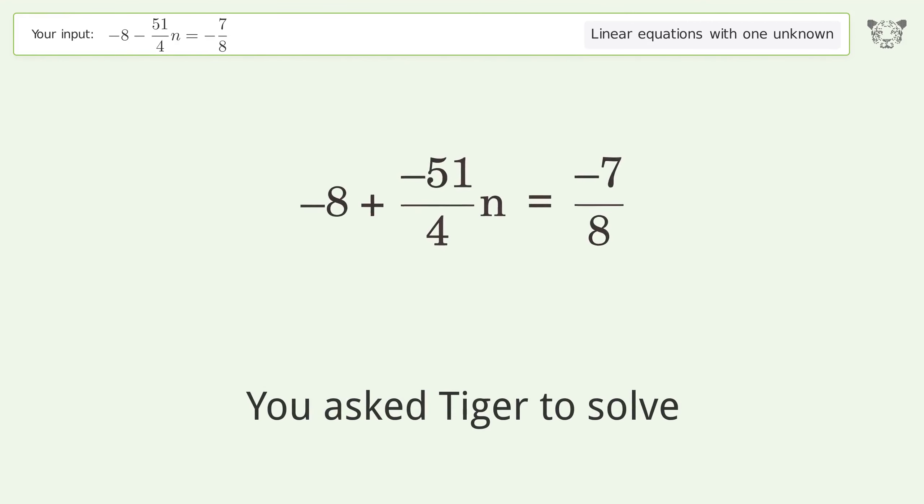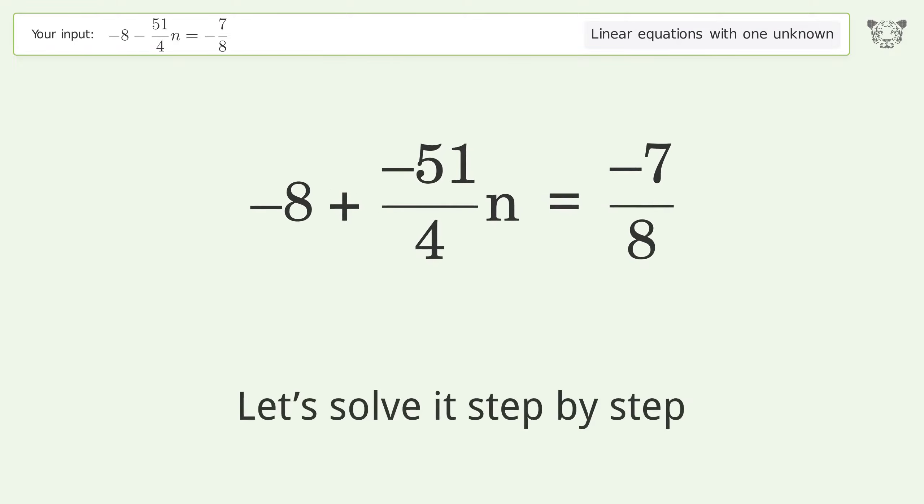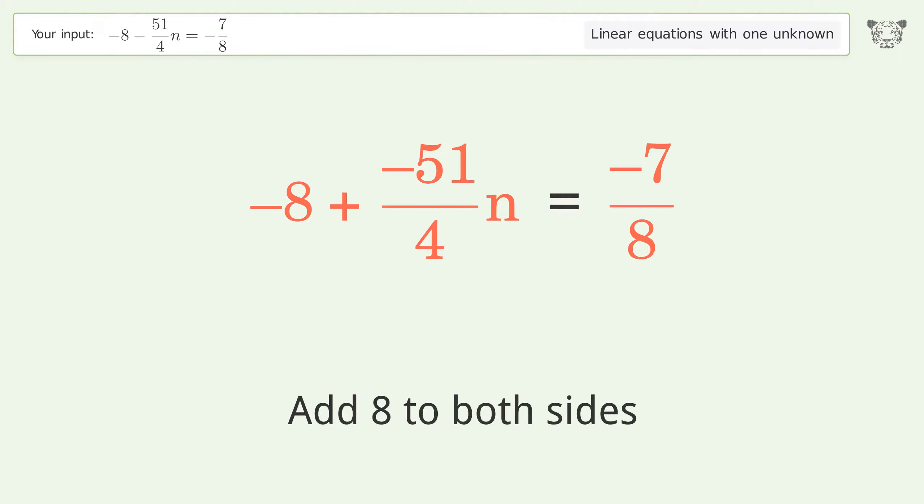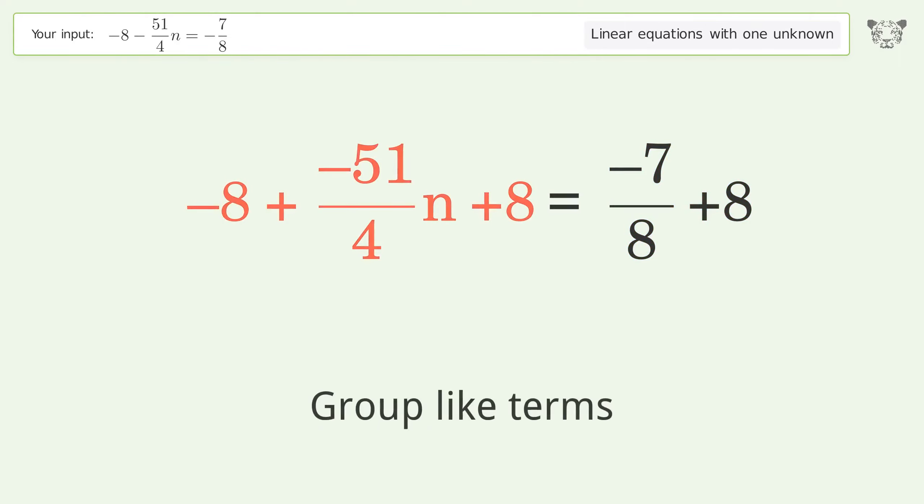You asked Tiger to solve this, which deals with linear equations with one unknown. The final result is n equals negative 19 over 34. Let's solve it step by step. Group all constants on the right side of the equation, add 8 to both sides, group like terms.